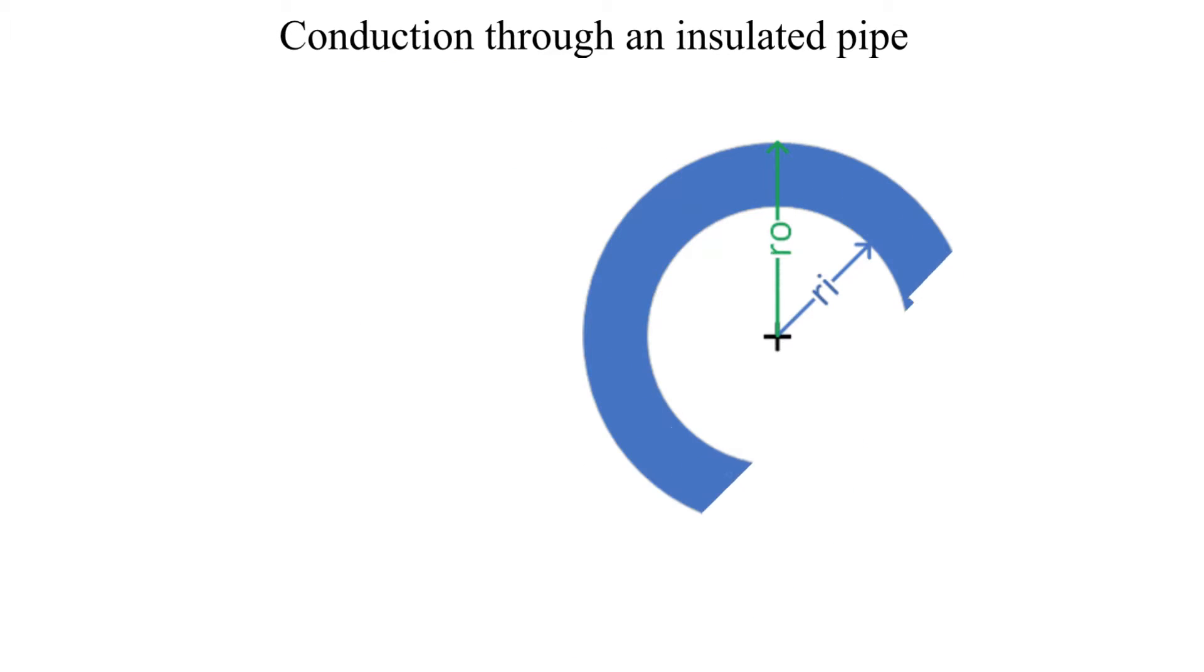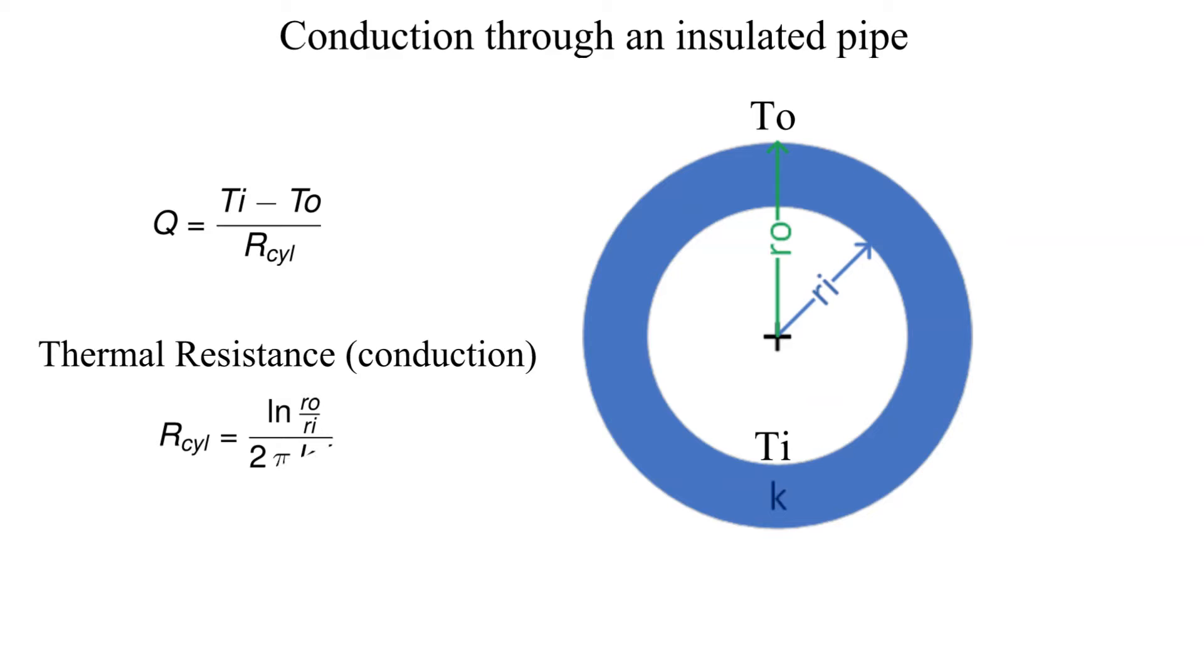Let's review how we calculate radial heat transfer from a thermal resistance network. The equation for heat transfer is equal to the change in temperature divided by the sum of all the thermal resistances. A simple situation shown has only one thermal resistance. To calculate the thermal resistance due to conduction in cylindrical coordinates we need the inner and outer radius, the length of the cylinder, and the conductivity. The equation for thermal resistance is shown here.